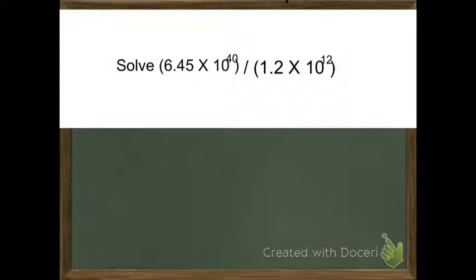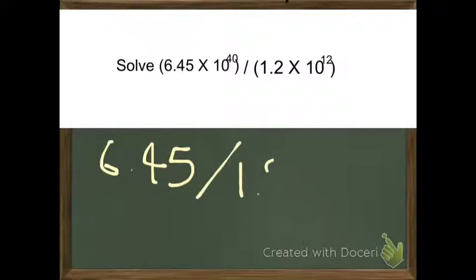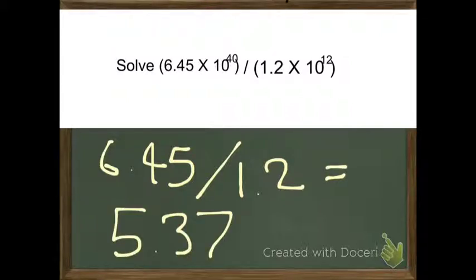So to solve this problem, we'll have to basically divide 6.45 by 1.2. That's also equal to 5.376.